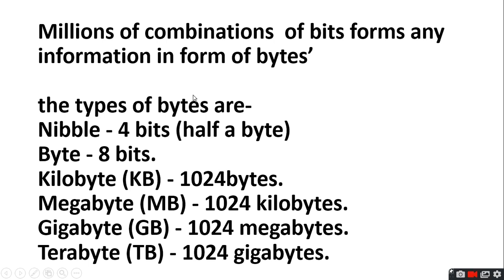Types of bytes: nibble equals to 4 bits (half a byte), byte equals to 8 bits, kilobyte equals to 1024 bytes, megabyte equals to 1024 kilobytes, gigabyte equals to 1024 megabytes, and terabyte equals to 1024 gigabytes. Iske baad aur bhi units hain jinko aap padh sakte hain. Is tarah se hamari information bytes ke form mein computer mein bits se ban kar banti hai.